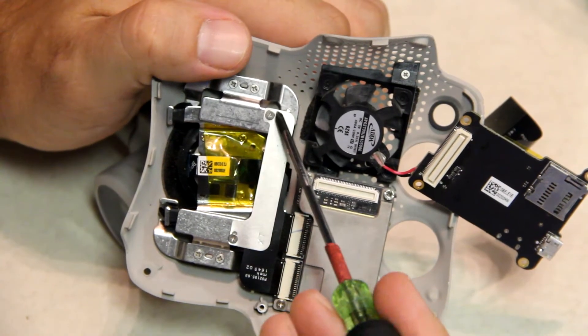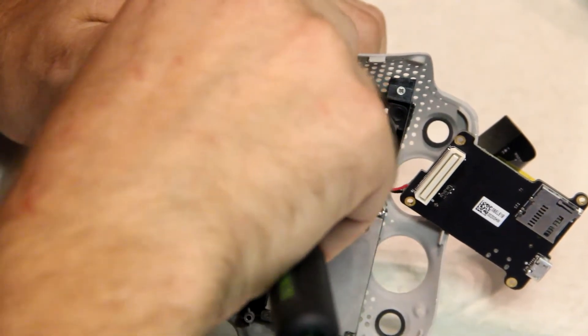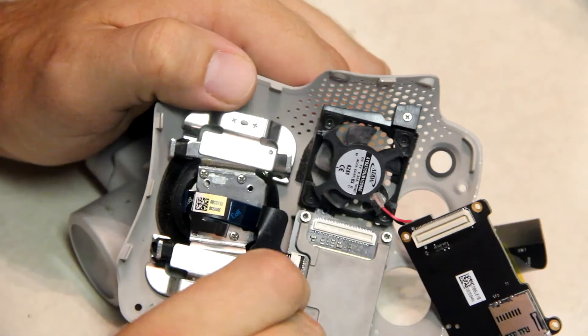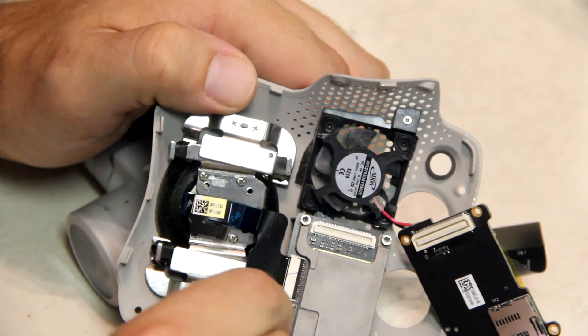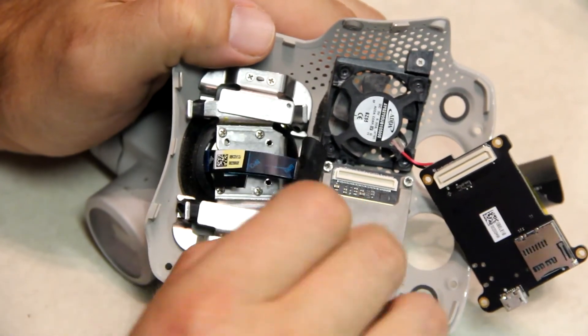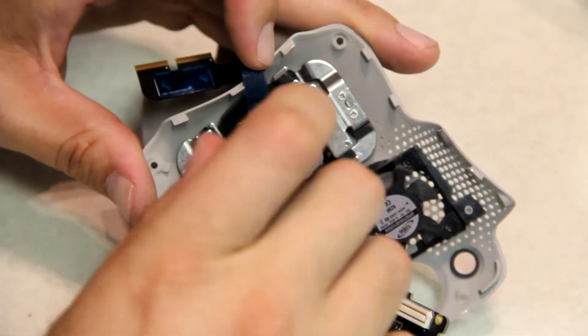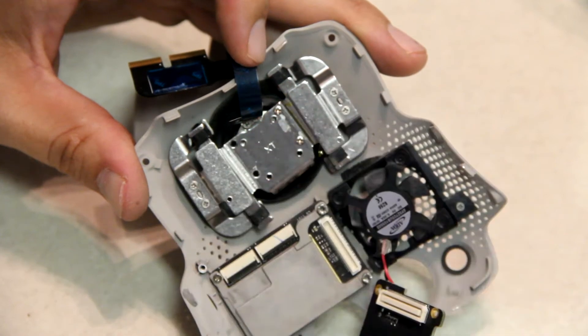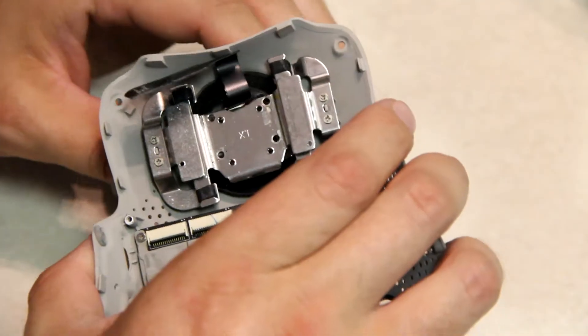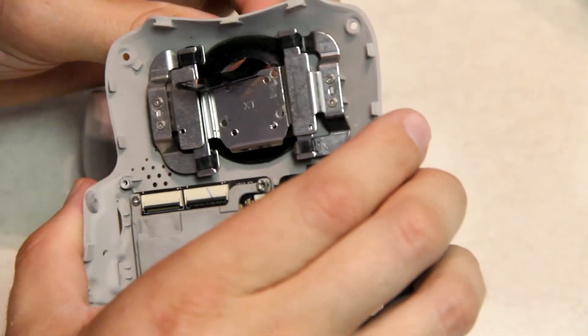There's a couple more screws that we have to remove right here. Go ahead and remove this yellow tape. This is a little sticky but what you want to do is peel it up and pull that out. Now you can go ahead and remove the ribbon cable.